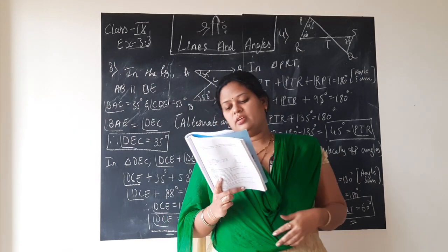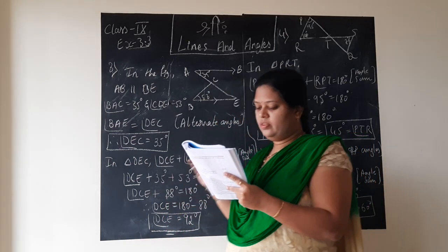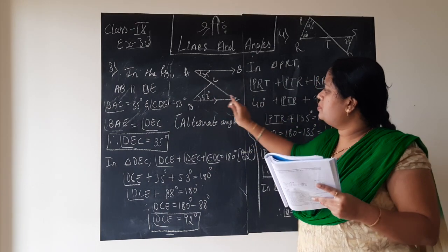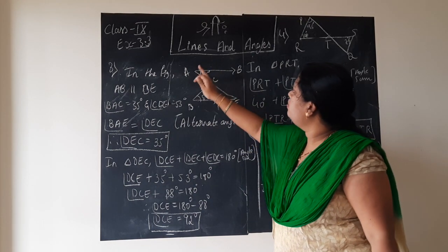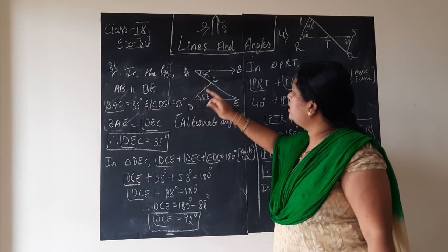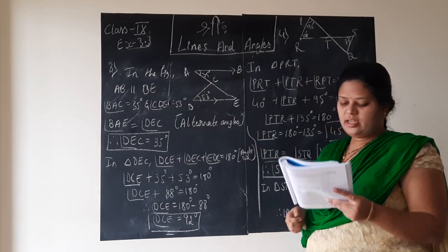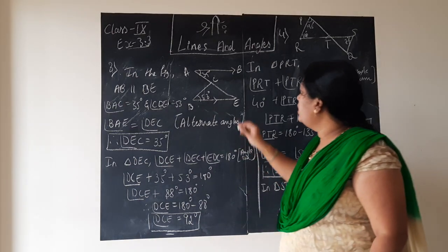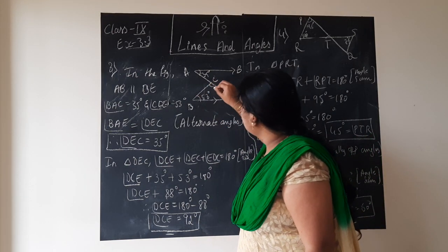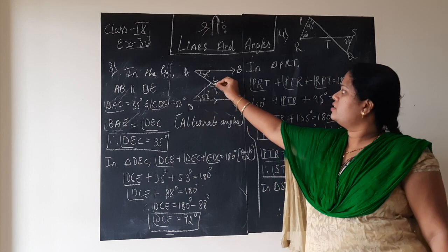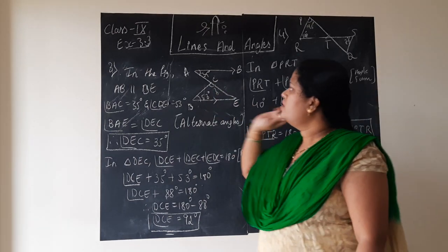The third question, children. I'll read you the question from the figure. This is the figure: AB is parallel to DE, angle BAE is 35 degrees, and angle CDE is 50 degrees. They are asking us to find out what is angle DCE, meaning angle C is the question mark.